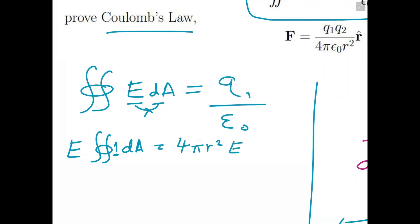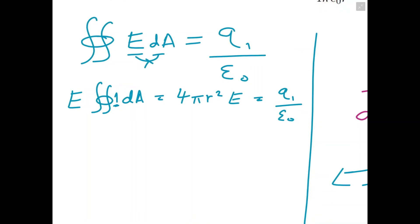So 4πr² times E, and by Gauss's Law, that's equal to q₁ over ε₀. So now we're getting something a bit familiar to Coulomb's Law. Let's rearrange for E, so we know that E is equal to q₁ over 4πr²ε₀.